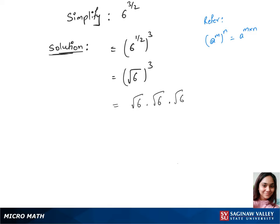Let's take those first two root 6 and root 6 and write this as square root of 6 squared times root 6, and the square and square root get cancelled. We are now left with 6 times root 6. This is our final answer.